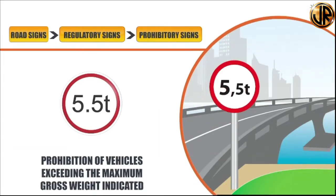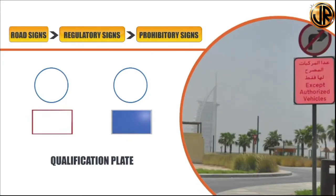The maximum weight limit sign illustrates that vehicles exceeding the maximum gross weight indicated are prohibited. The gross vehicle weight is the maximum operating mass of a vehicle as specified by the manufacturer including occupants and cargo; this sign is usually posted before bridges that cannot sustain the load. The qualification plate is a supplementary sign always attached with other signs; it displays limitations regarding the attached sign. These rectangular plates are found below other signs — for example, below a 'no hazardous material' sign, the qualification plate will display the permitted timings.